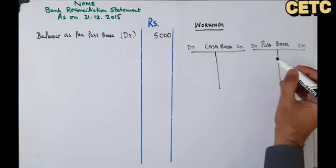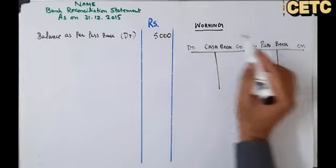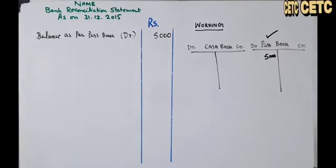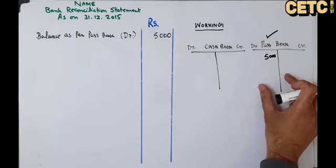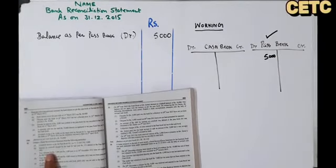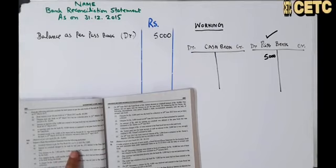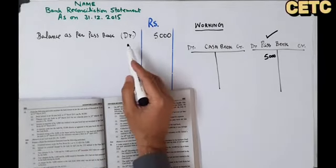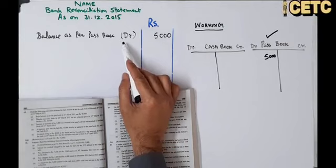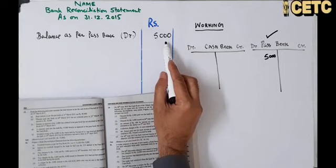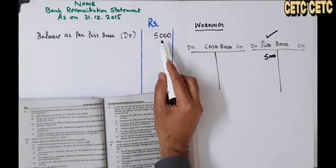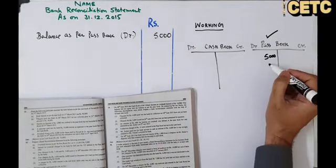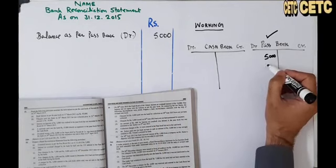یہی balance آپ نے passbook میں لکھ دینا ہے، debit balance ہے تو debit side پہ لکھئے — 5,000۔ اب ہم passbook کو deal کر رہے ہیں تو آپ نے اپنا focus ادھر ہی رکھنا ہے۔ Interest on overdraft charged by the bank for half year — rupees 275, debited in the passbook. ہمارا balance debit چل رہا ہے passbook کے مطابق، اور bank نے اسی کرزے کے اوپر interest charge کیا ہے، تو bank نے ہمارے account کو debit دے دیا 275 سے۔